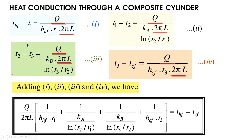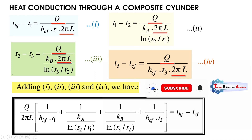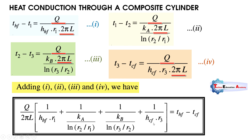During the addition, the intermediate temperature terms cancel: minus T1 and plus T1 cancel, minus T2 and plus T2 cancel, minus T3 and plus T3 cancel. So the only remaining temperature terms are T_hf minus T_cf. On the other side, the common term Q/(2πL) multiplies the bracket: 1/(H_hf·r₁) + ln(r₂/r₁)/K_a + ln(r₃/r₂)/K_b + 1/(H_cf·r₃).